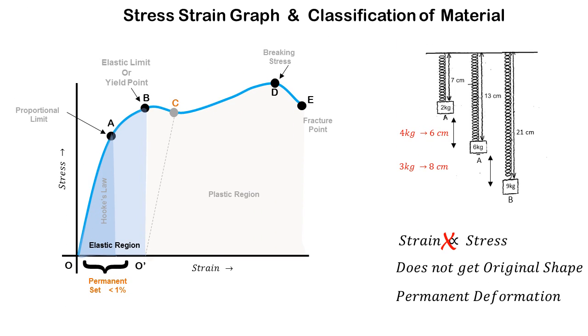This point C is in the plastic region, and here if the stress is removed, the material does not return to its original shape. We see a permanent deformation in the material.